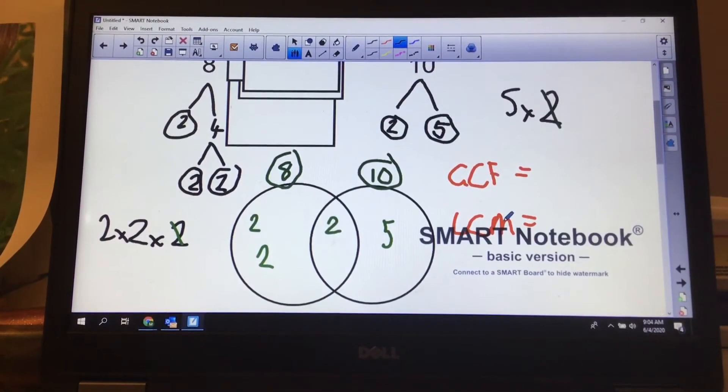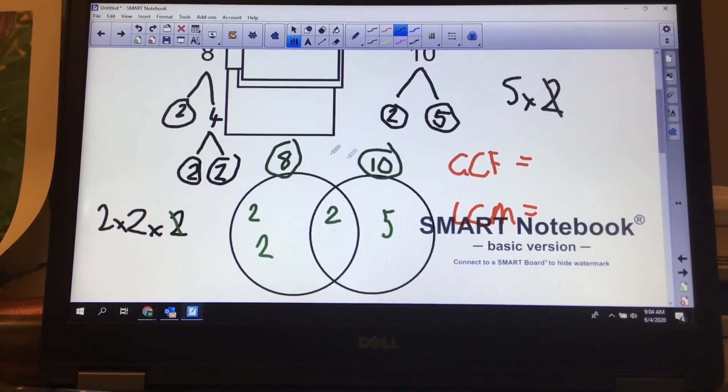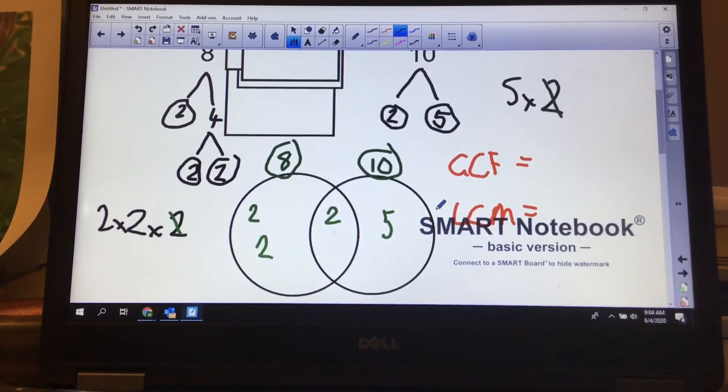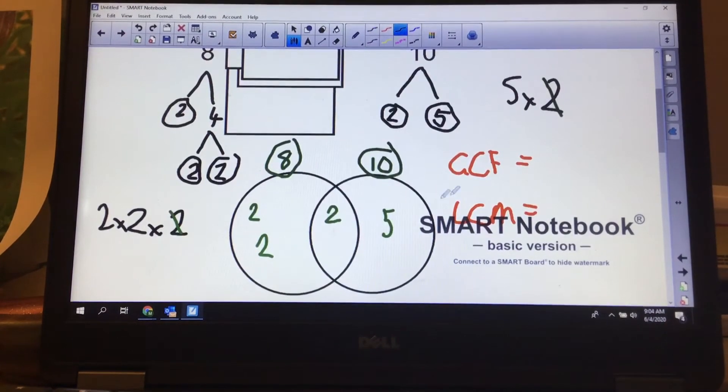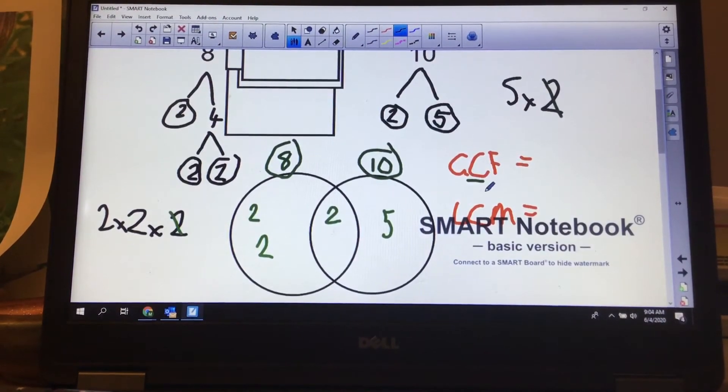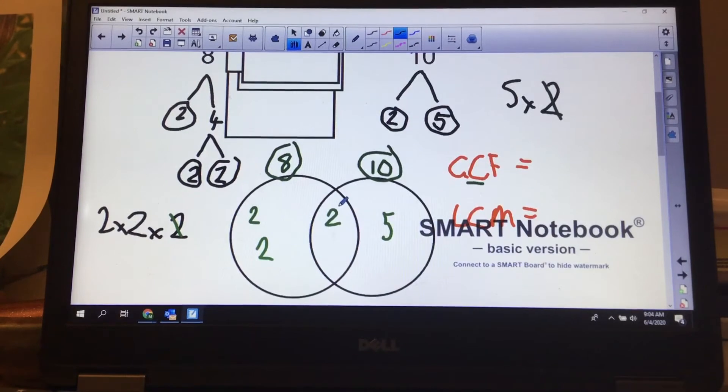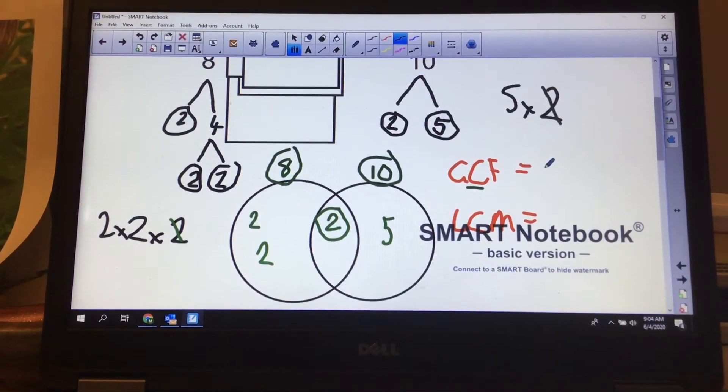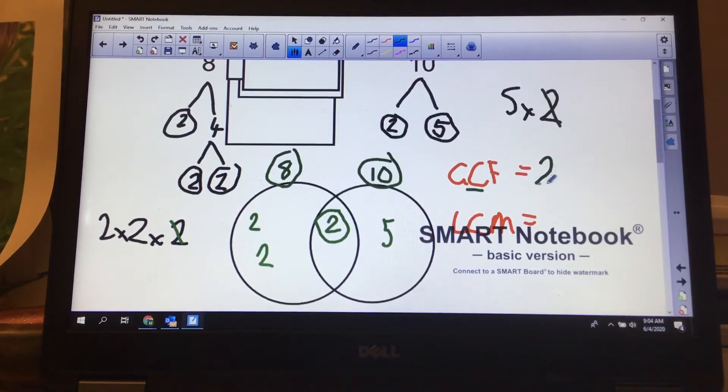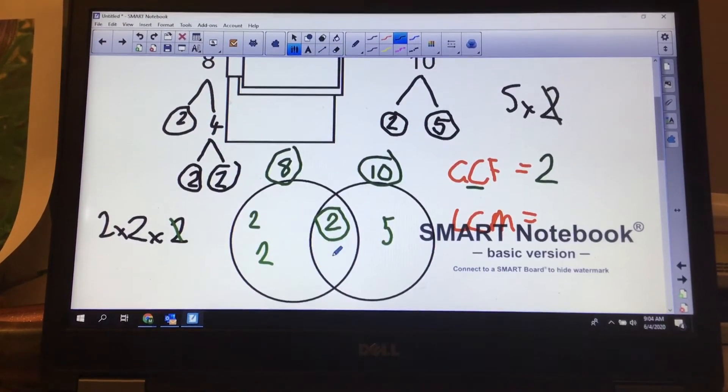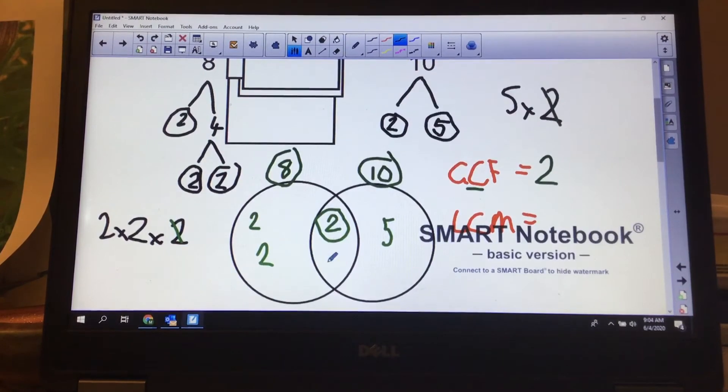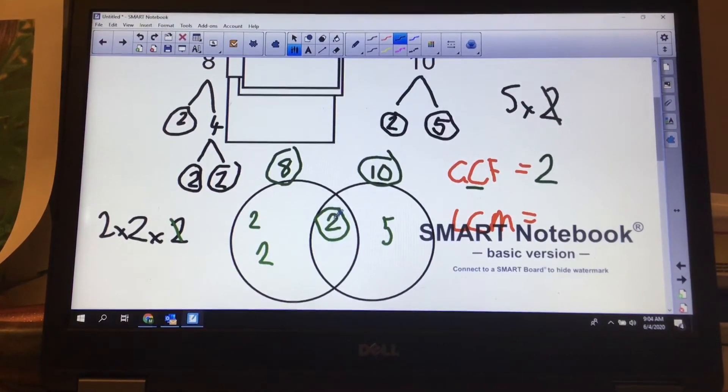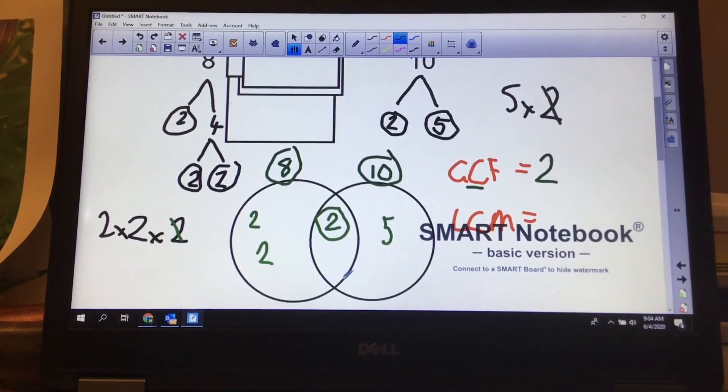So for my greatest common factor, whatever number is in the middle is my greatest common factor. So my greatest common factor is 2. If there had been 2 twos in there, I'd multiply them together. So whatever is in the middle of the Venn diagram, I multiply.